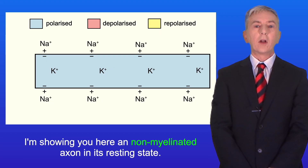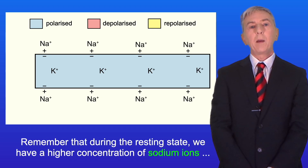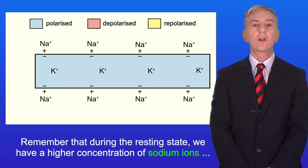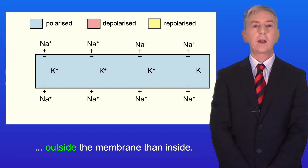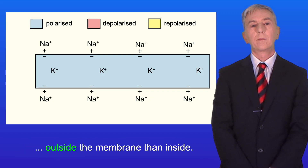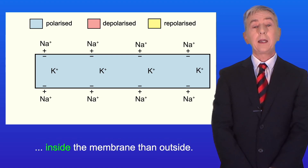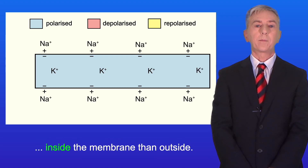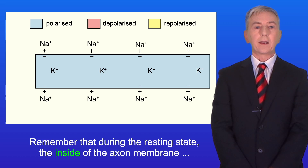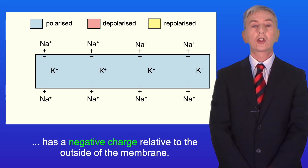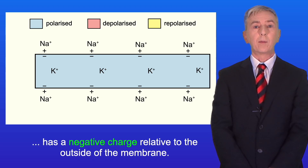I'm showing you here a non-myelinated axon in its resting state. Remember that during the resting state we have a higher concentration of sodium ions outside the membrane than inside. We also have a higher concentration of potassium ions inside the membrane than outside. And remember that during the resting state the inside of the axon membrane has a negative charge relative to the outside of the membrane.